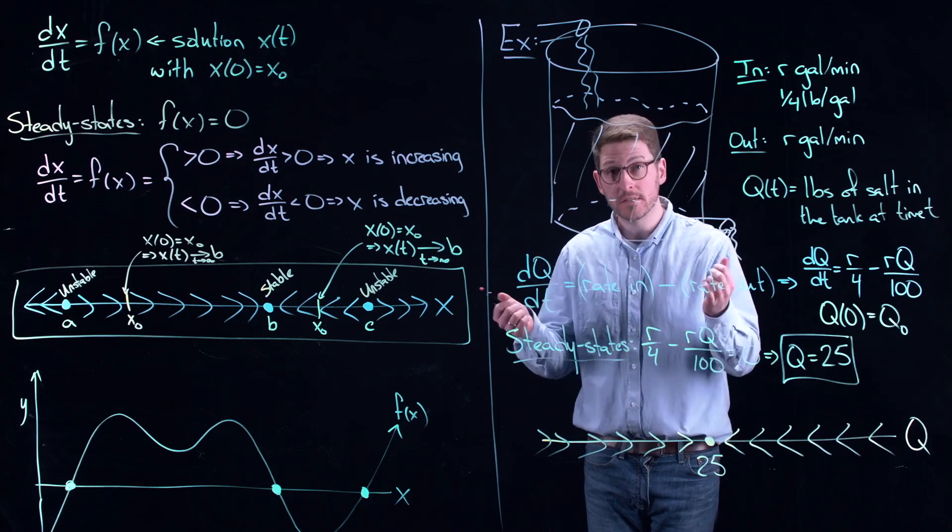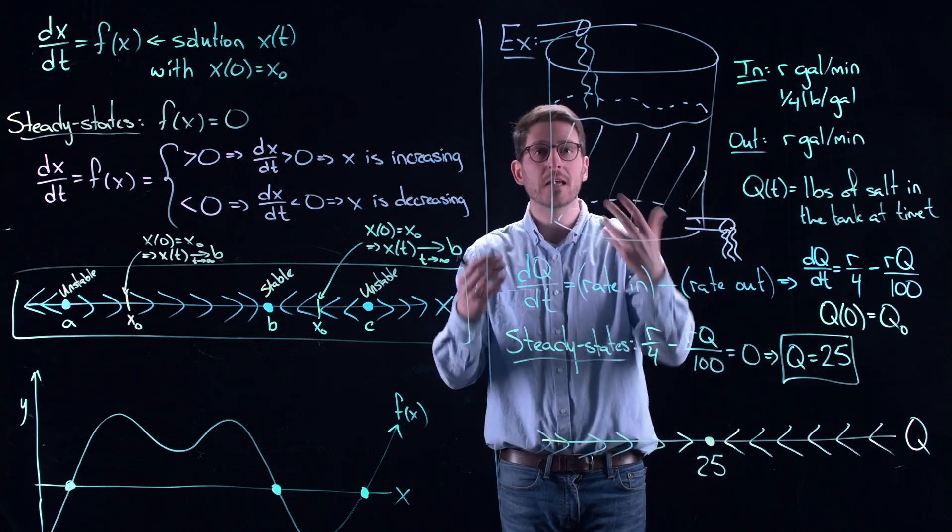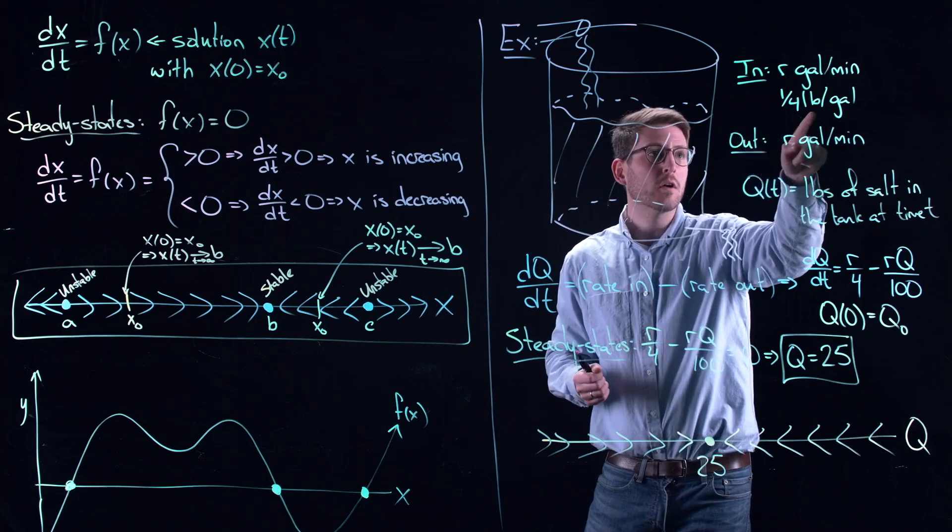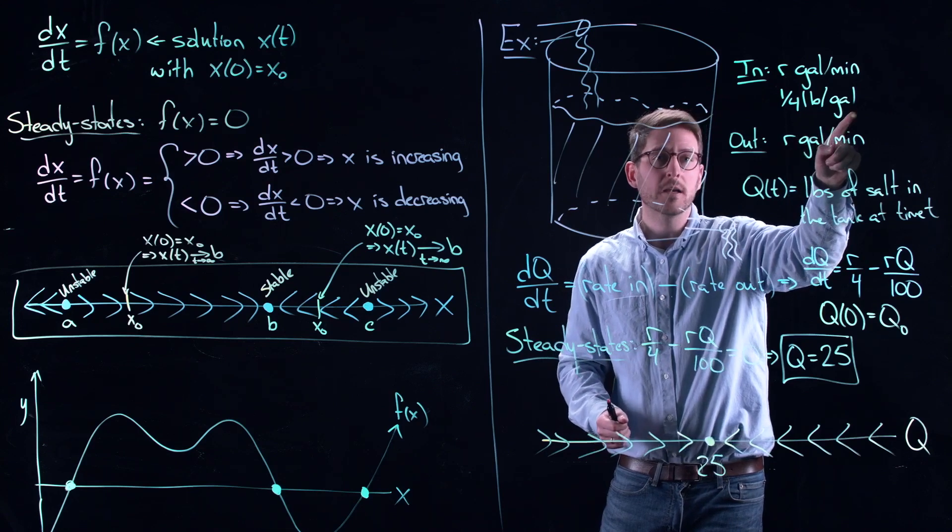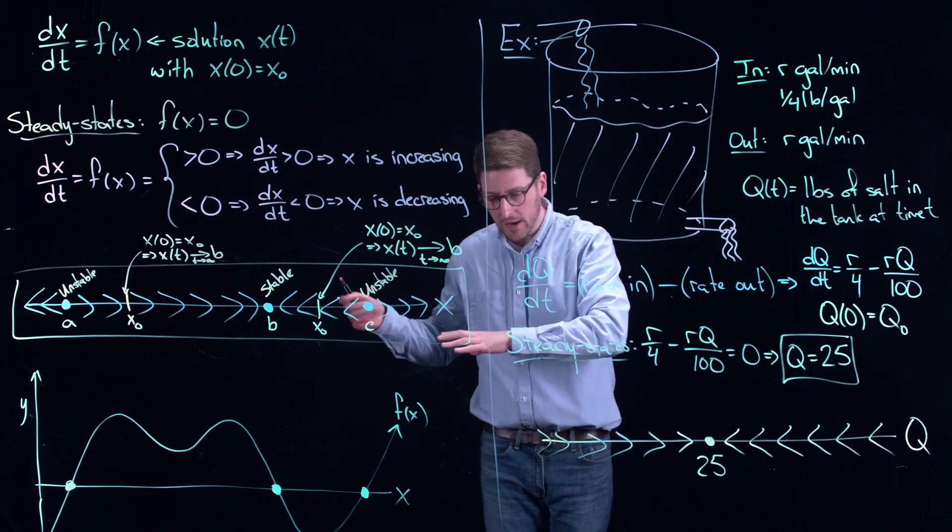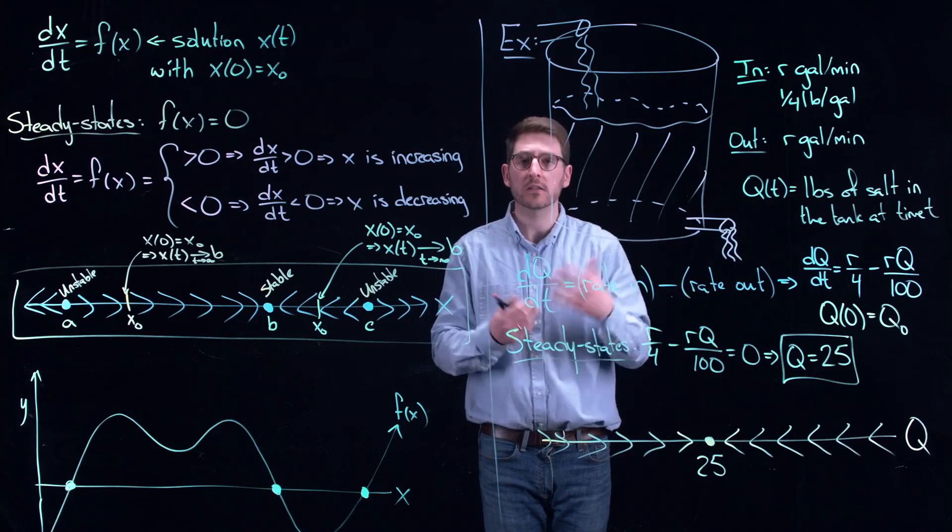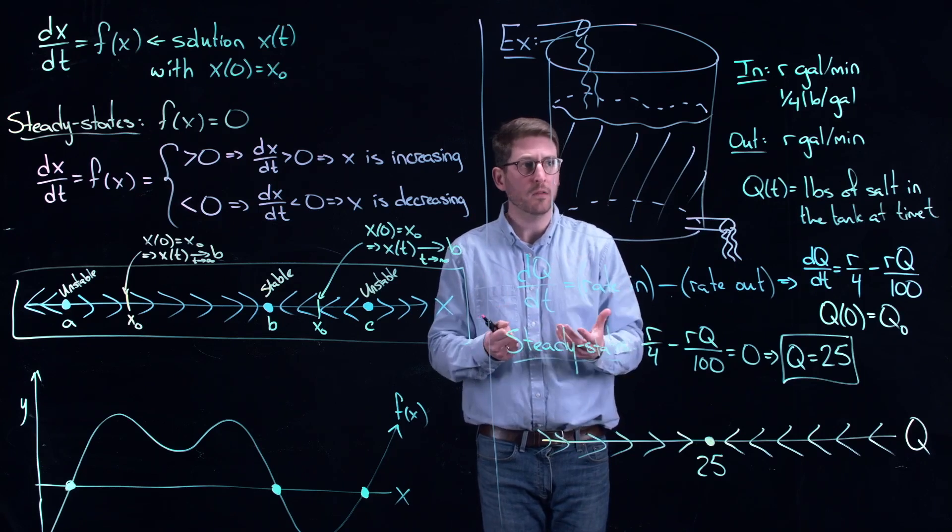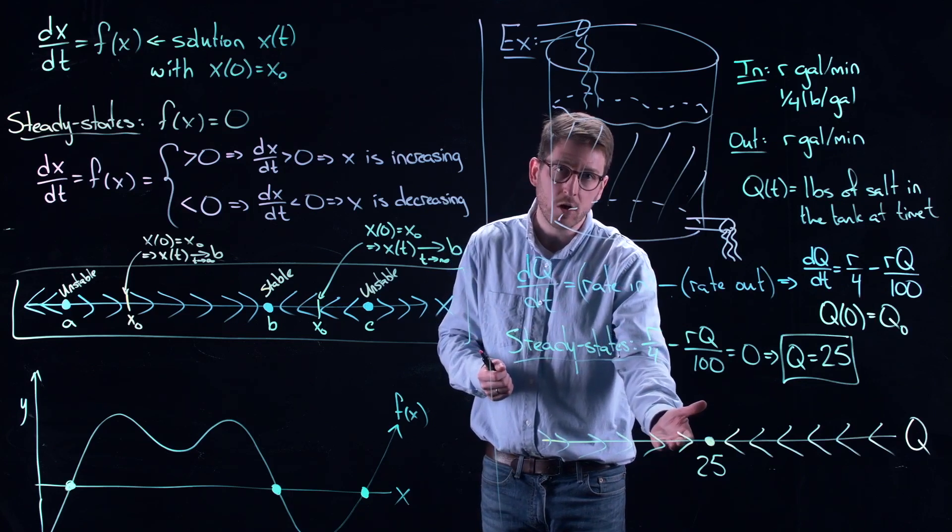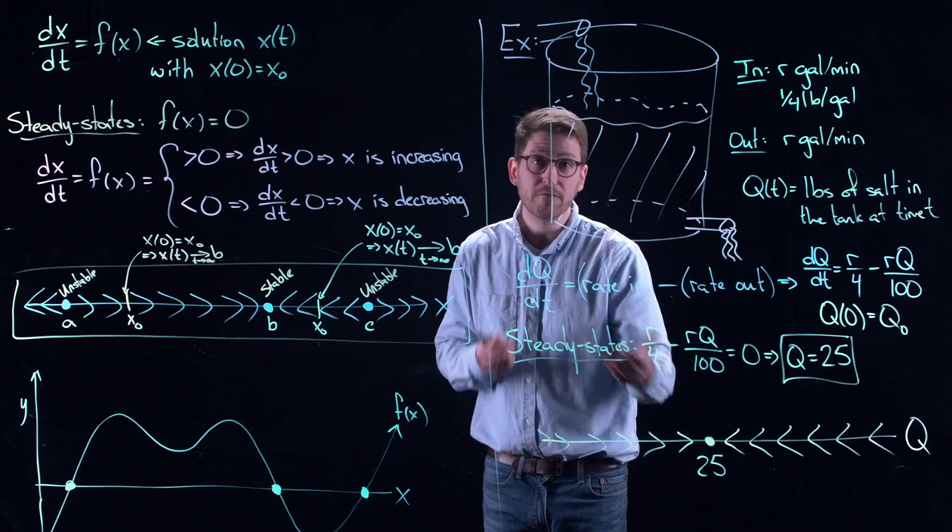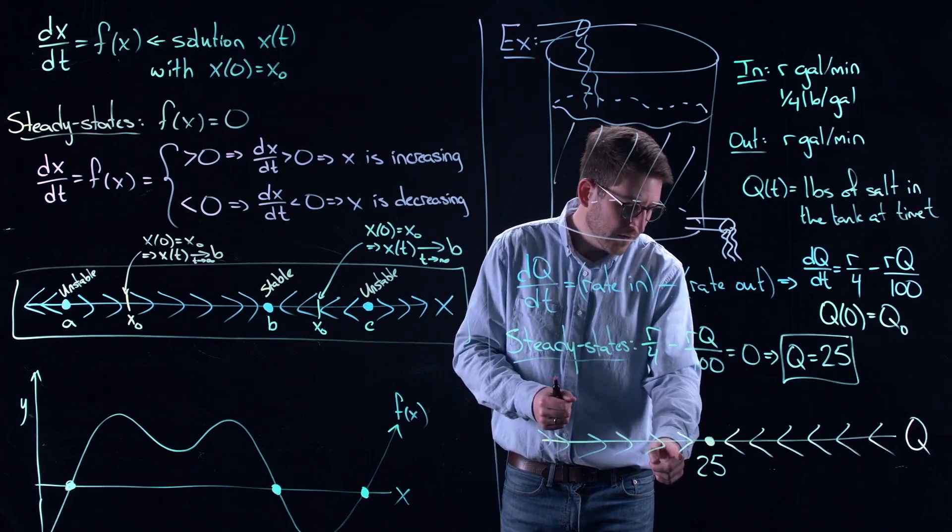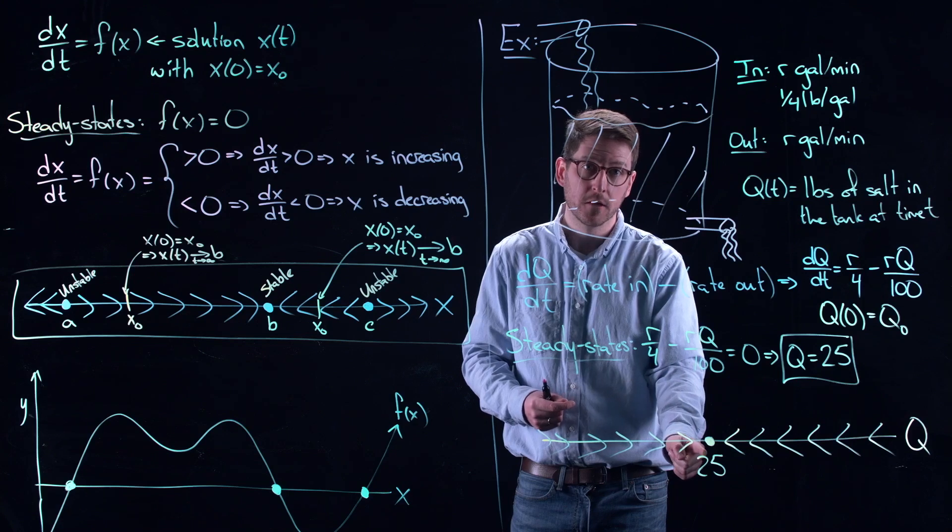So what would that mean for me physically? If I set this experiment up and say I only put 10 pounds of salt in the tank, what happens? Well, I continually add a quarter of a pound of salt per gallon that's coming in. And if I left my tank and I came back a long time later, depends on how I'm measuring t in this case. Then what I would see is a continual increase in the salt concentration in my tank. Until eventually, if I left this for a really, really long time, I mean as t goes to infinity technically, then I'm approaching 25 pounds of salt in my tank.